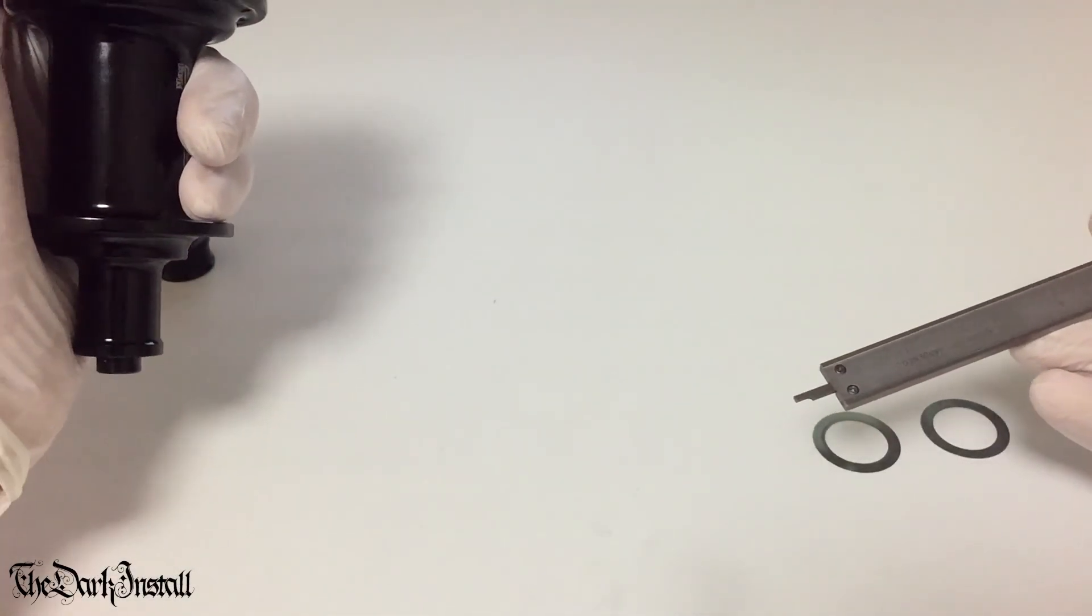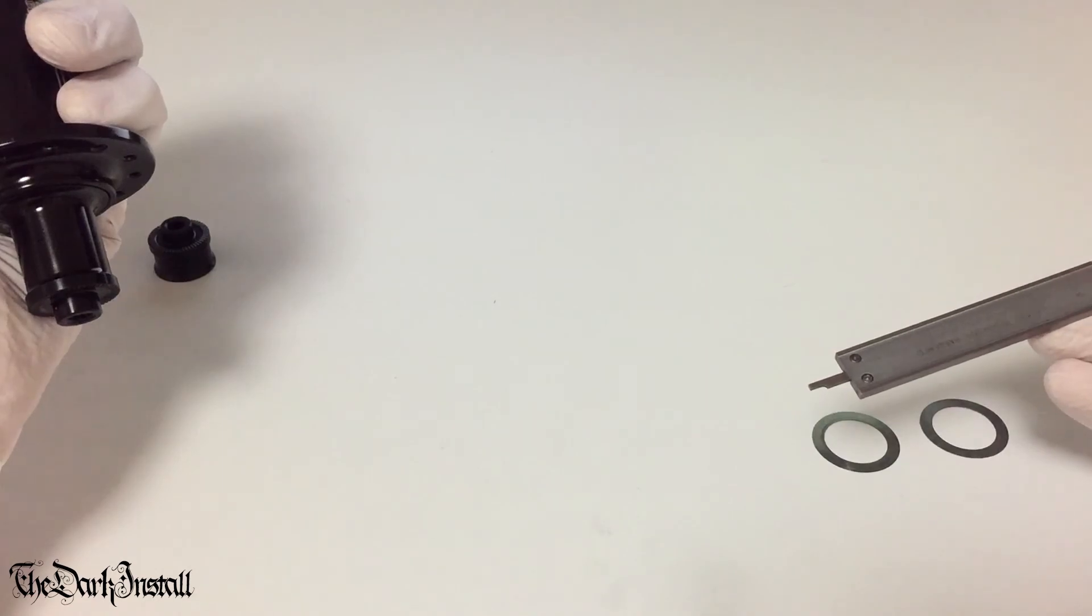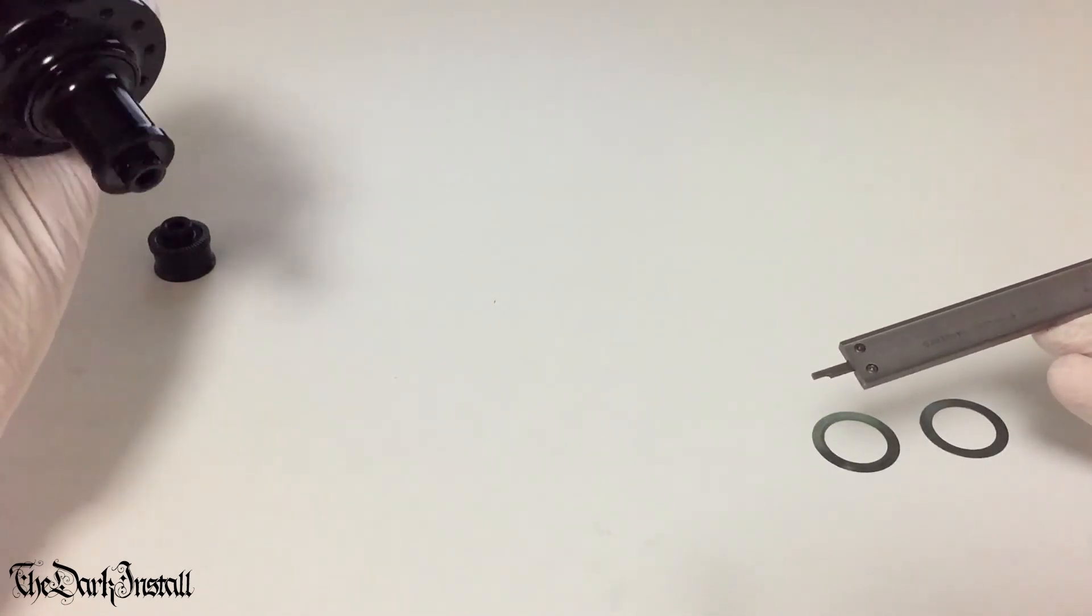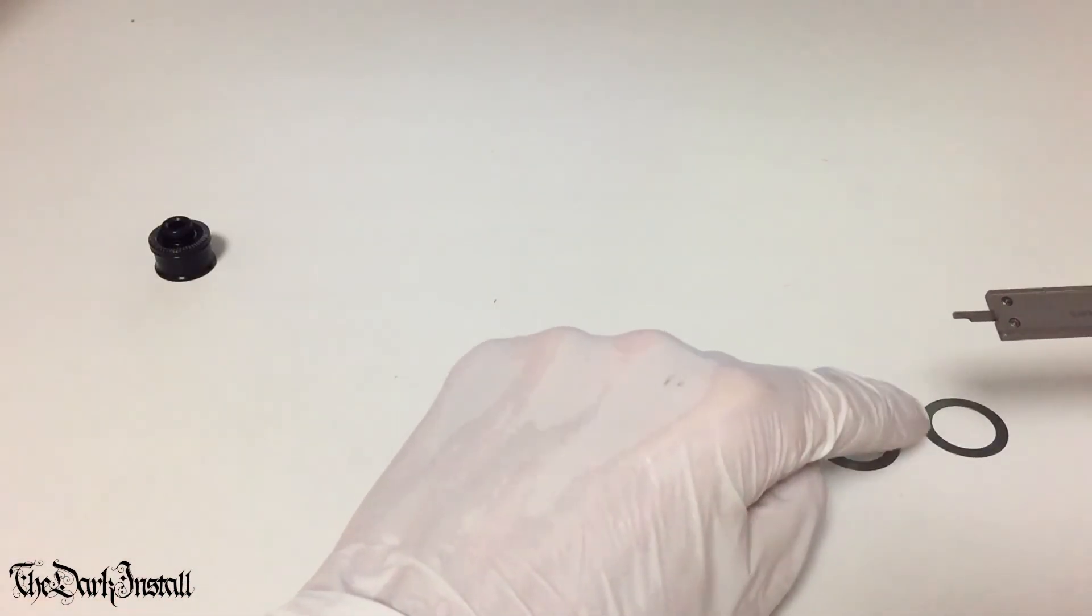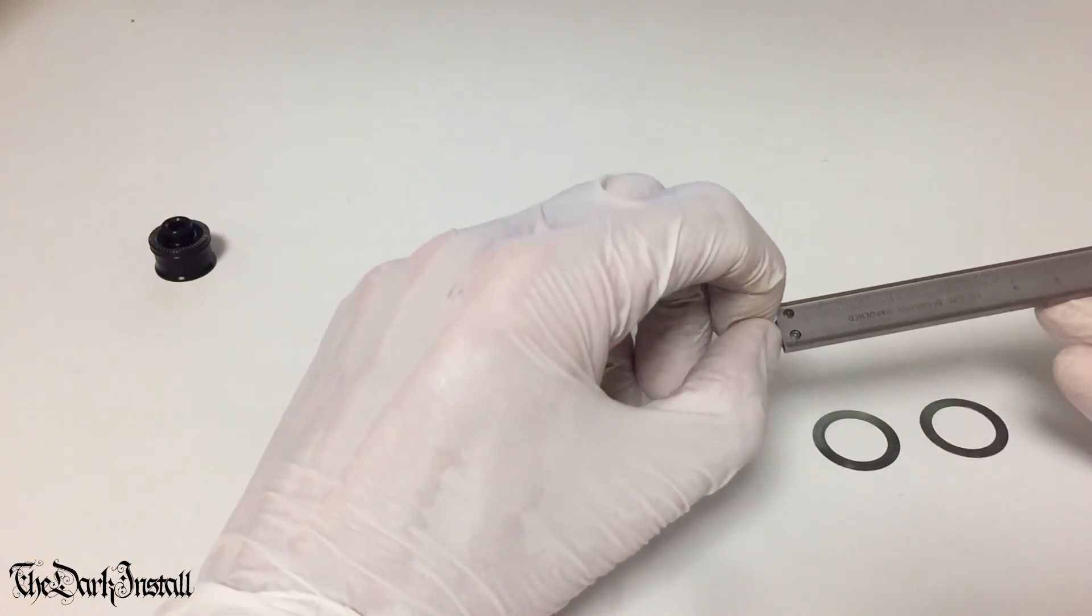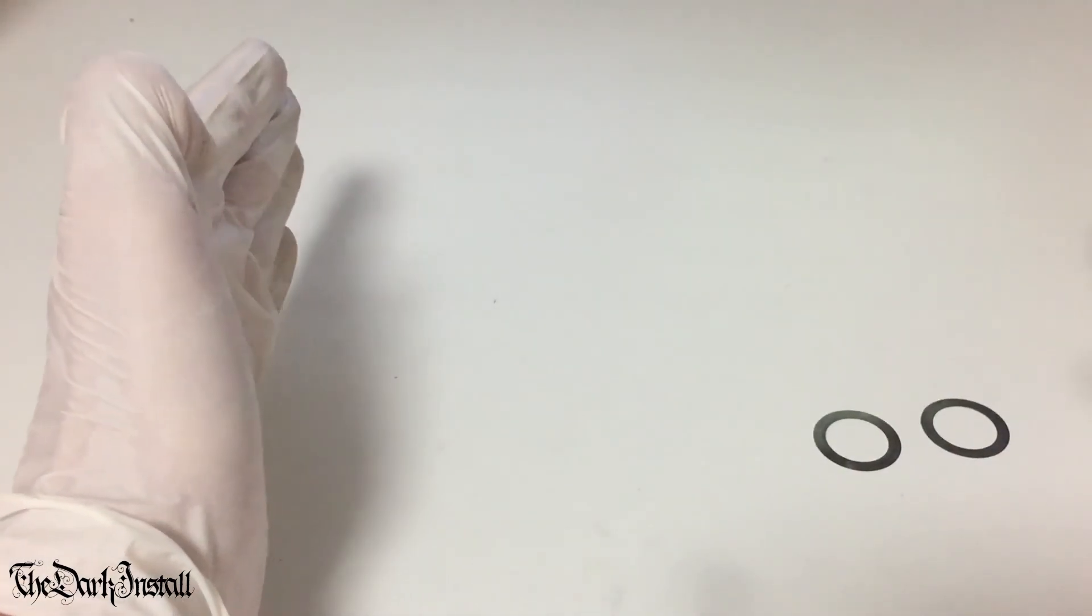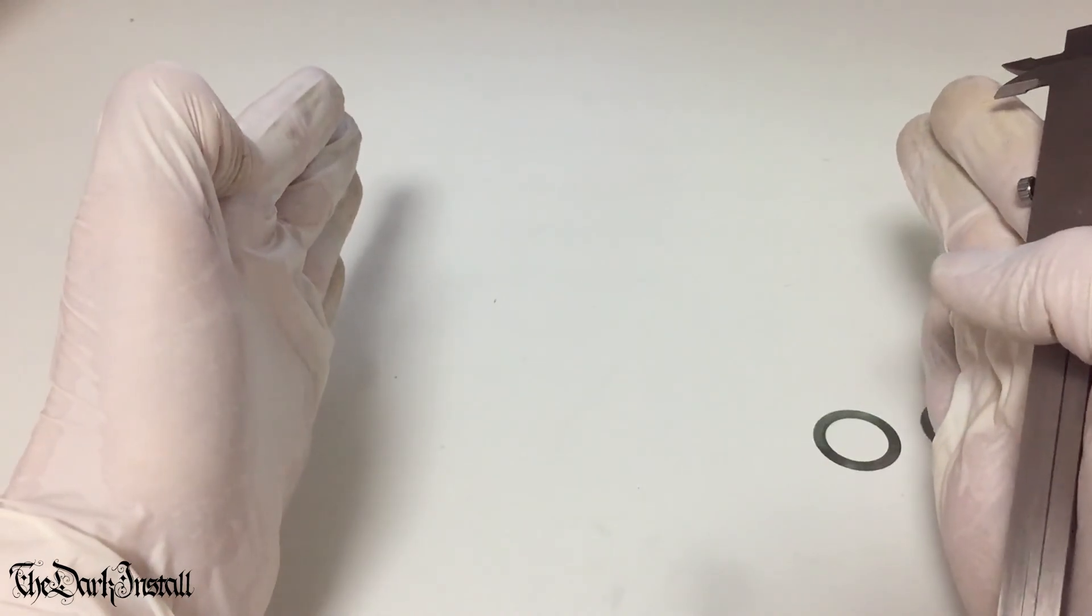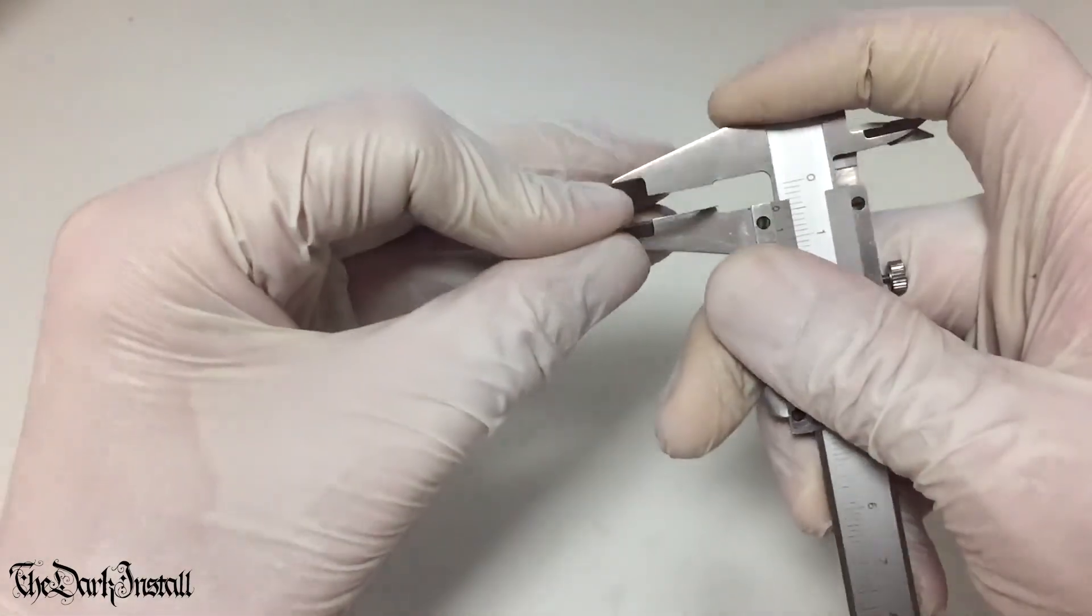So 9.15 minus 8.5 is 0.65. Now 0.65 minus 0.2 is 0.45. Therefore, the amount of washers here should be 0.45. The reason you take 0.2 off is because that's the amount of bearing play before you clamp it all together with your skewer. So these should be 0.45. So let's measure this. This one is 0.2.